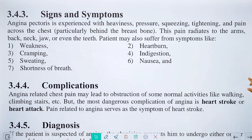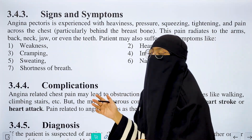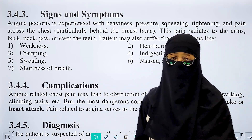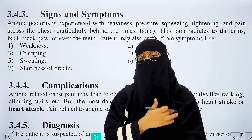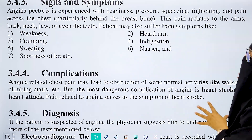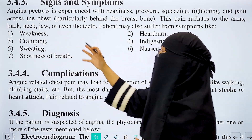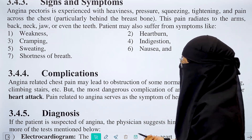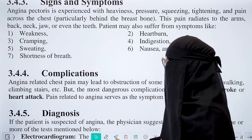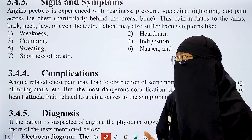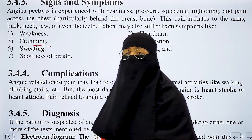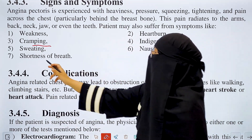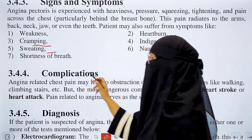Now let's talk about the signs and symptoms of angina pectoris. It can cause chest pain, which generally radiates to the left arm or left side of the neck, back, neck, and jaw. Common symptoms also include weakness, a burning sensation in the heart, cramping of heart muscles, indigestion, sweating, nausea, and shortness of breath.